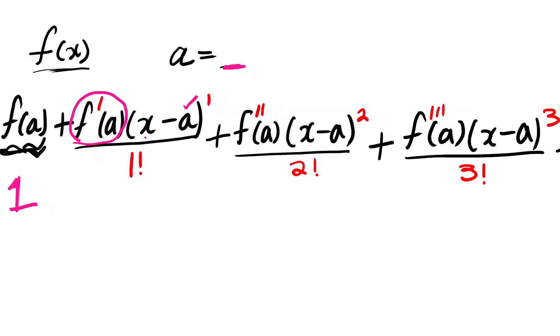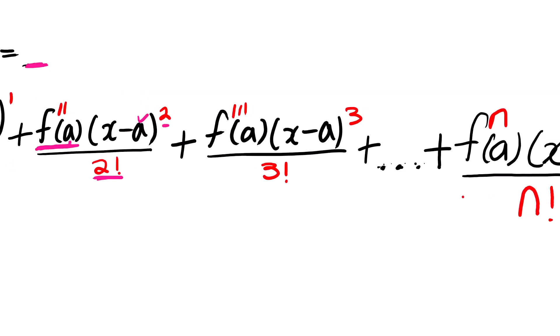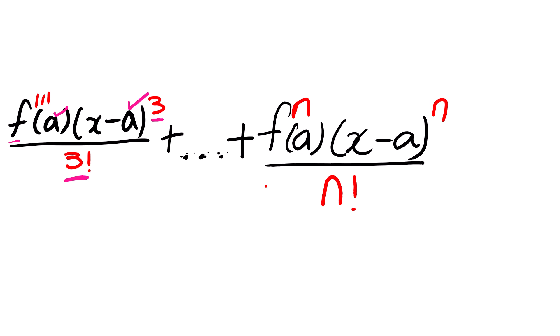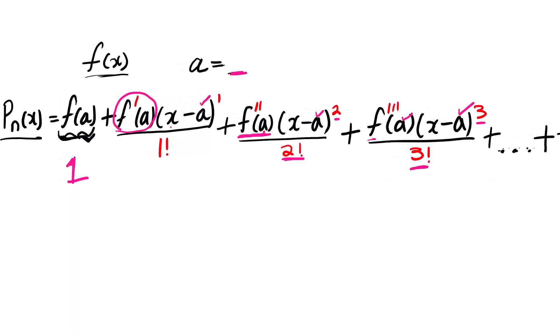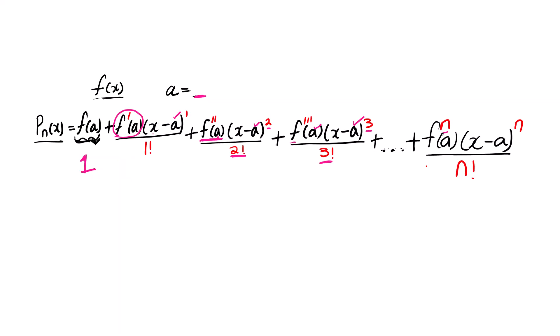The third term uses the second derivative of your function, substitute your point, and then it's (x − a)² divided by 2 factorial. The next term uses the third derivative, substitute your point, (x − a)³ divided by 3 factorial. This continues until the nth term — we can go on up to infinity, depending on how the question asks.